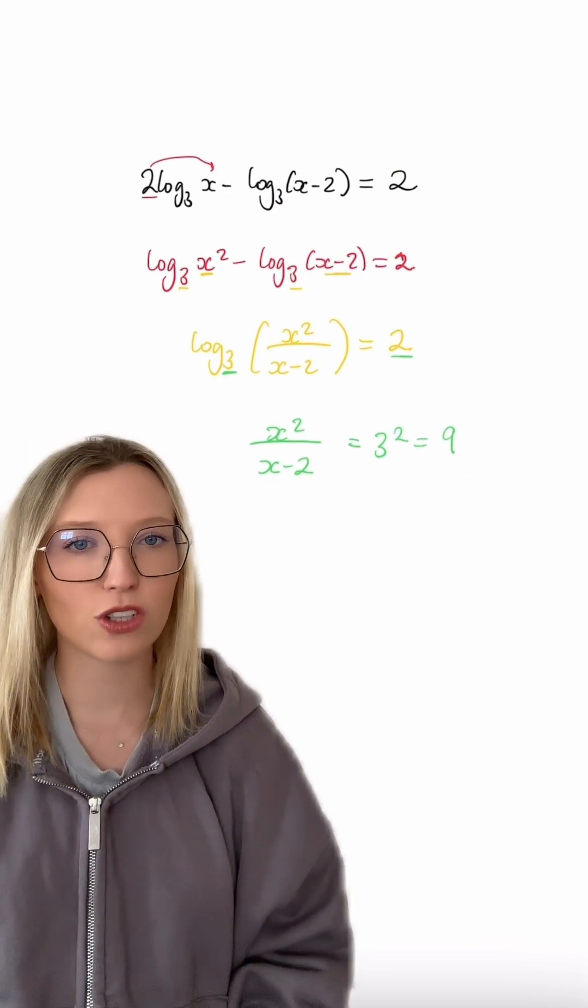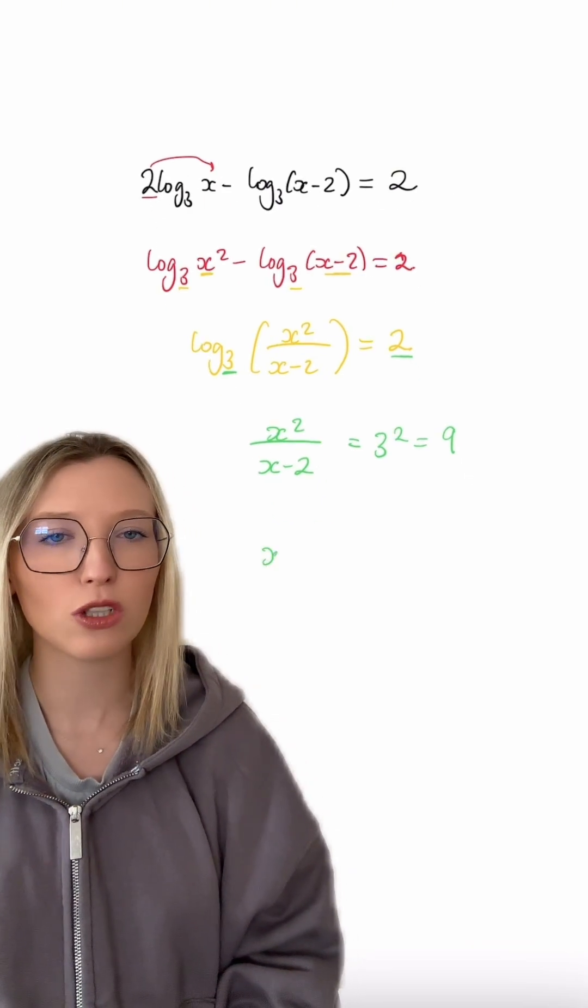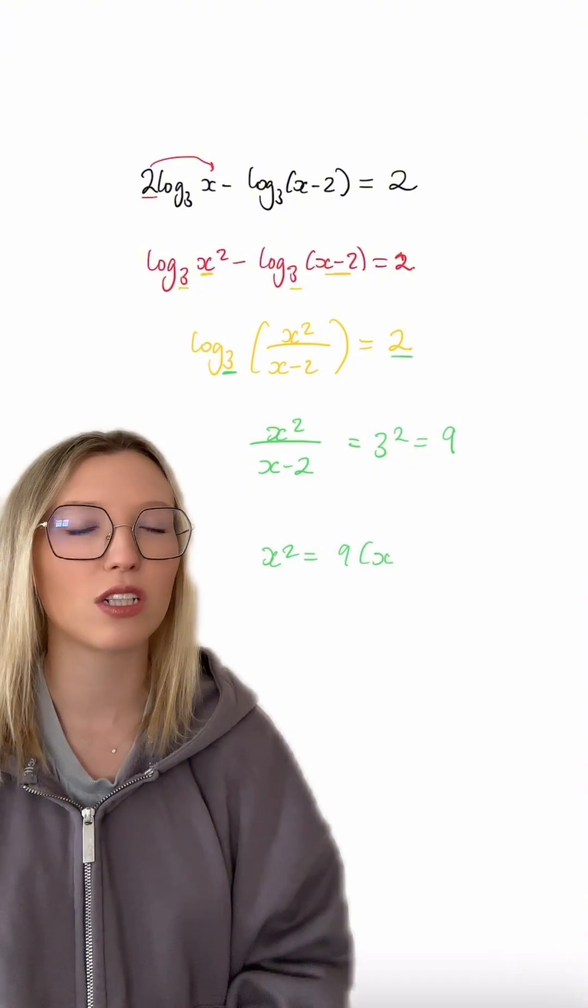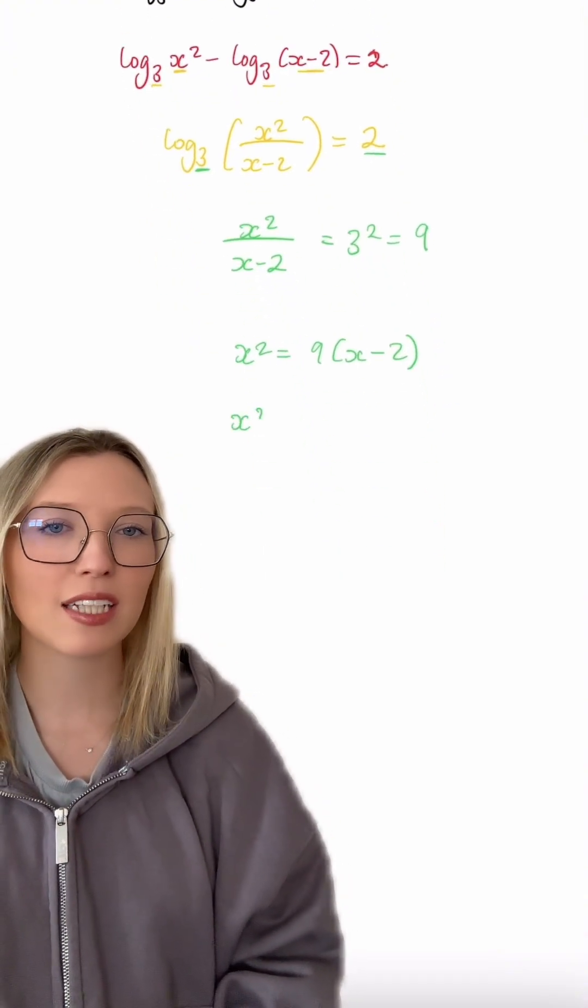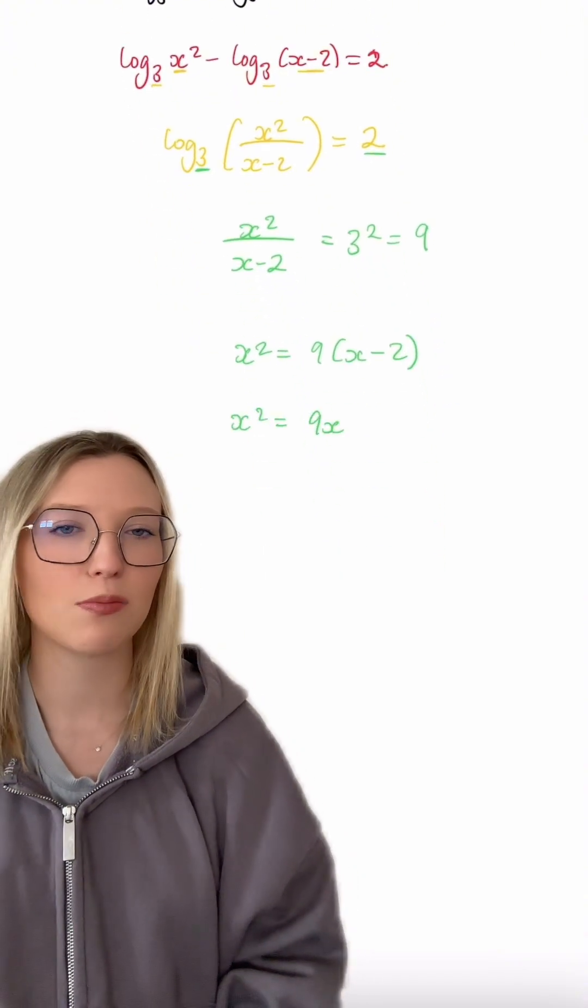If we go ahead and rearrange this to bring up the fraction denominator, we're going to get x squared equal to 9 in brackets x minus 2. Expanding that out, we get x squared equals 9x minus 18.